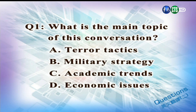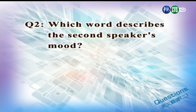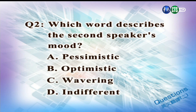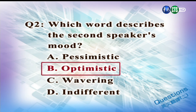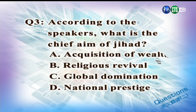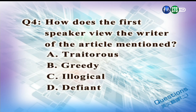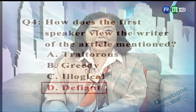接着从刚才的英文会话里面挑一些选择题的 questions 来问同学。Question one: What is the main topic of this conversation? A. Terror tactics. B. Military strategy. C. Academic trends. D. Economic issues. — A. Terror tactics. Question two: Which word describes the second speaker's mood? A. Pessimistic. B. Optimistic. C. Wavering. D. Indifferent. — B. Optimistic. Question three: According to the speakers, what is the chief aim of jihad? A. Acquisition of wealth. B. Religious revival. C. Global domination. D. National prestige. — C. Global domination. Question four: How does the first speaker view the writer of the article mentioned? A. Traitorous. B. Greedy. C. Geological. D. Defiant. — D. Defiant.